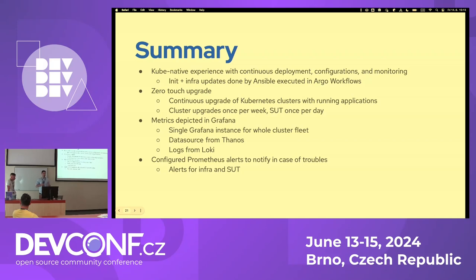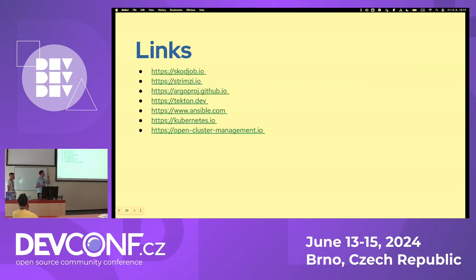We also have Alert Manager installed alongside Prometheus, so in case something happens we get a notification on Slack. Everything we use is available on GitHub — we have all the examples in the Automation Hub and Deployment Hub, which are publicly available so you can check how we configure things and reuse them.